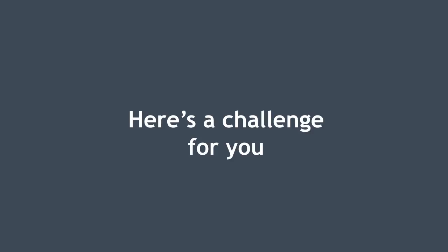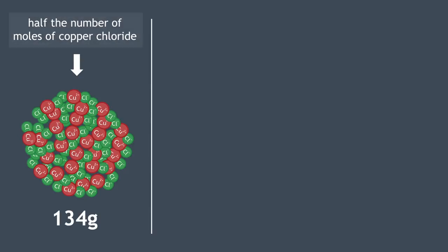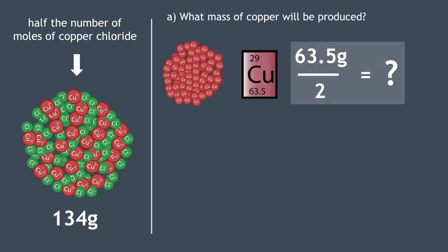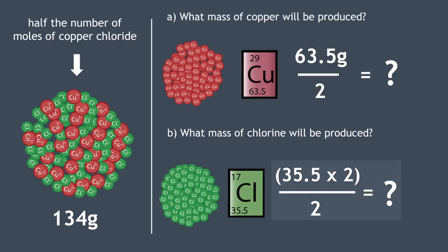Here's a challenge for you. If we were to use half the number of moles of copper chloride, then A, what mass of copper would be produced and B, what mass of chlorine would be produced. Pause the video and resume when ready.